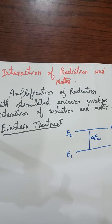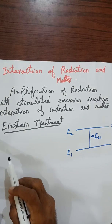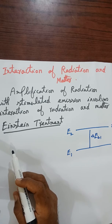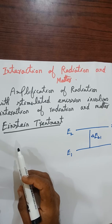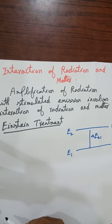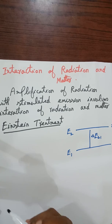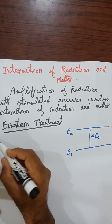According to Einstein, an atom may exist in level one or in level two, and there may be three possibilities about the interaction of radiation and matter for atoms in these two levels.